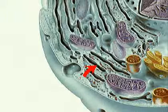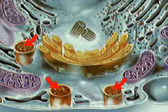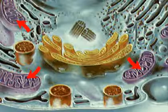The lysosomes are simple sacs which store enzymes, the powerful chemicals involved in digestion. The mitochondria are the main sites of energy production within the cell.